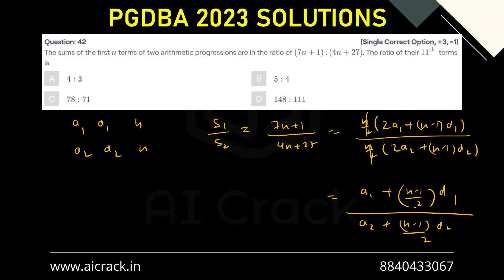Now if I put n equals 21 over here, I will be getting this as 10. I will be getting this as 10.